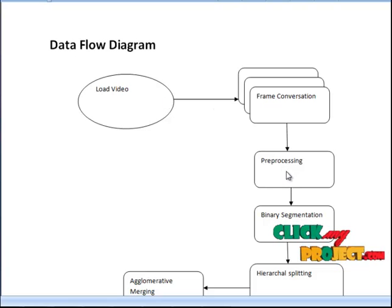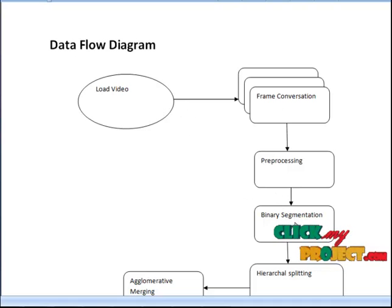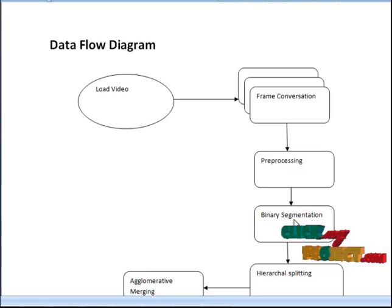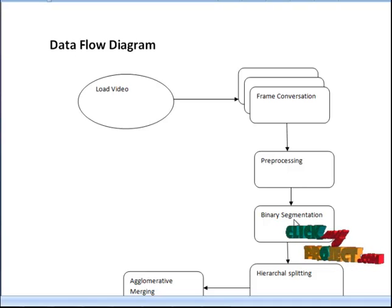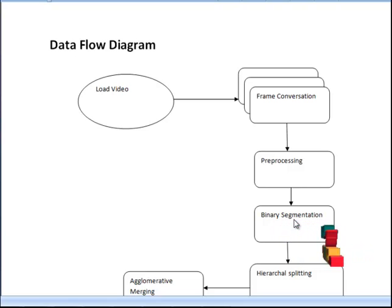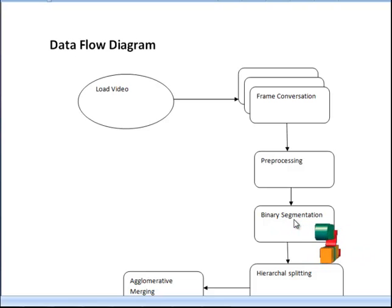The next step is preprocessing, where a Gaussian filter is applied to the input frames and video images. The next step is binary segmentation. Segmentation is the process of partitioning a digital image into multiple segments — sets of pixels also known as superpixels. The goal of segmentation is to simplify or change the representation of an image into something more meaningful and easier to analyze, typically used to locate objects and boundaries in images. More precisely, image segmentation assigns a label to every pixel such that pixels with the same label share certain visual characteristics.